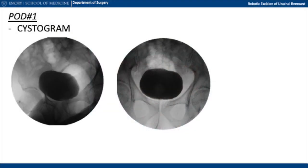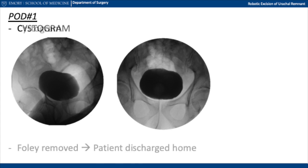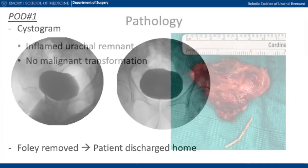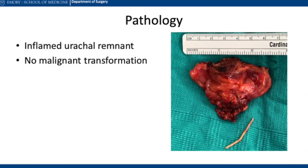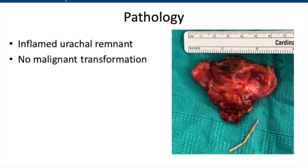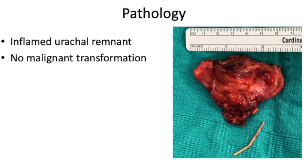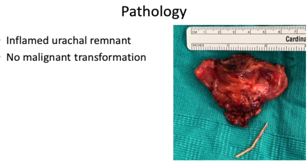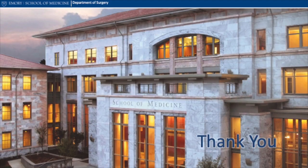On postoperative day one, a cystogram was performed to again confirm that the bladder was intact, with no evidence of injury or remaining sinus. The Foley was then removed and the patient was discharged home. Pathology showed an inflamed urachal remnant with no signs of malignant transformation. Thank you very much for watching our presentation of a robotic excision of a urachal remnant with associated infected cyst.